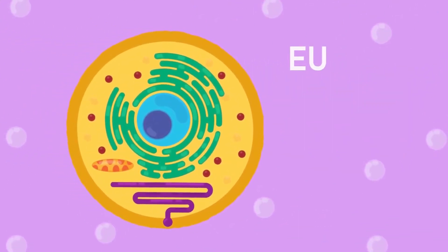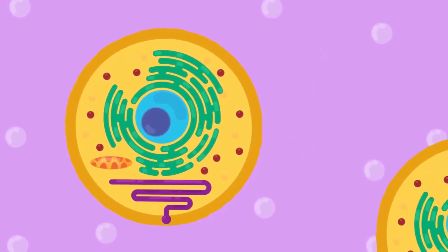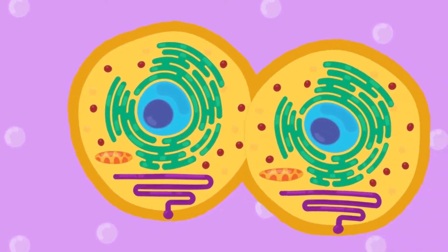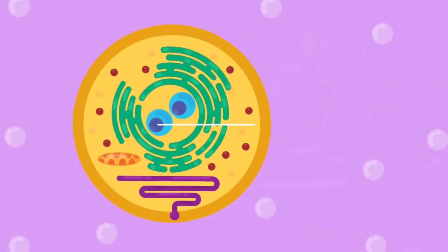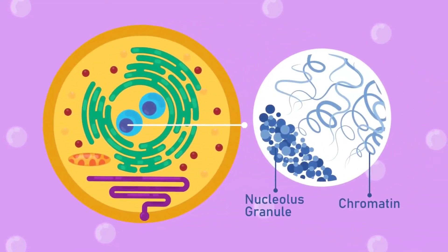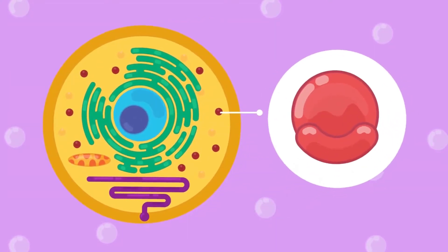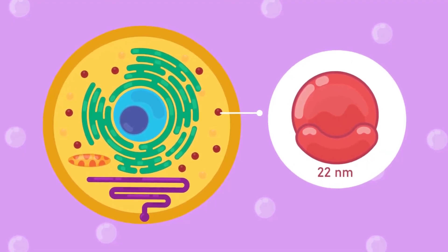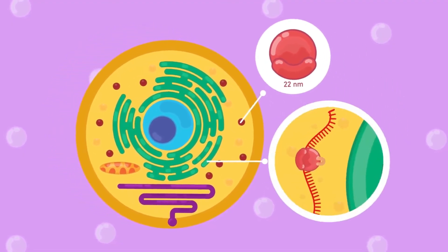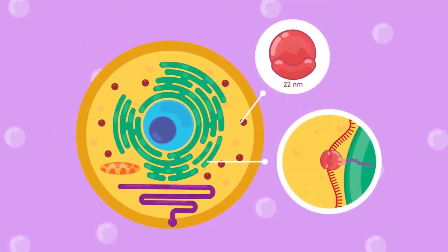The 'eu' in eukaryote means true, and karyon, like we mentioned before, means nucleus. So as the name suggests, eukaryotes have a nucleus, or more than one nuclei in their cells, and their genetic material resides inside it. Their ribosomes are slightly larger, about 22 nanometers in diameter, which in most cases is attached to the endoplasmic reticulum.